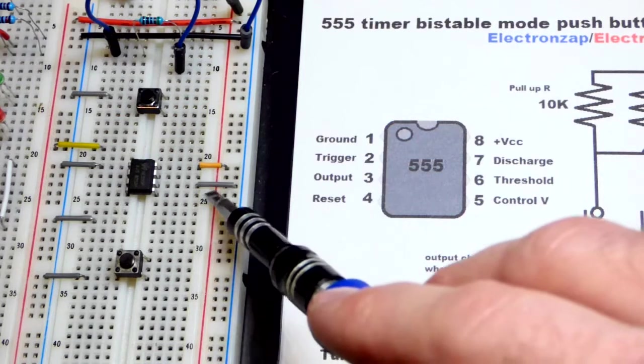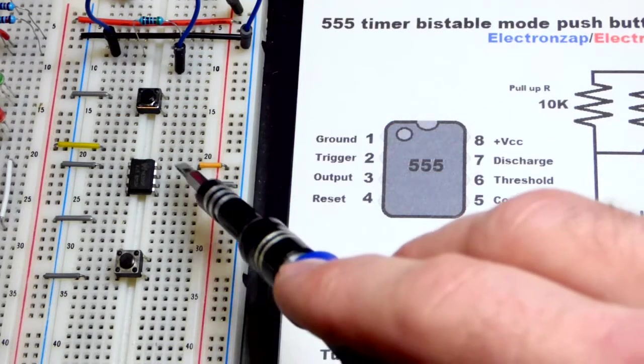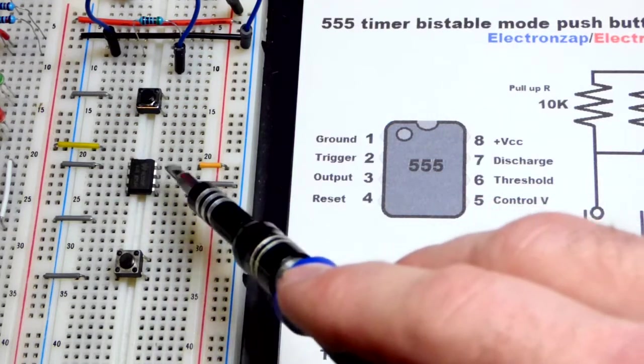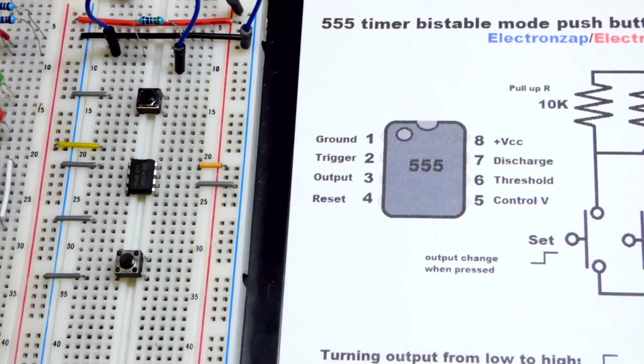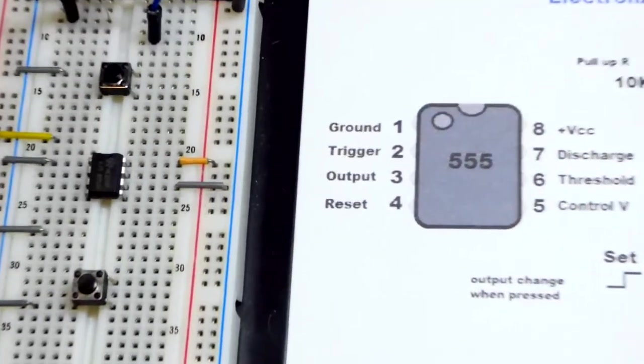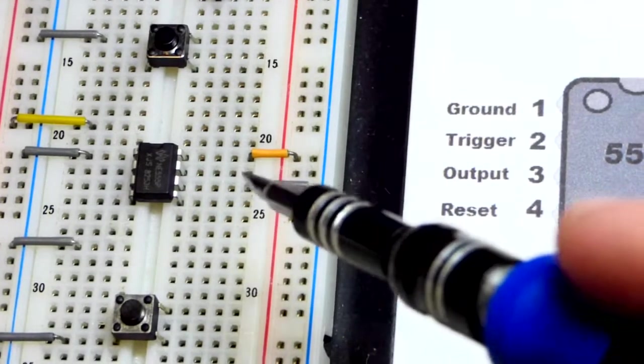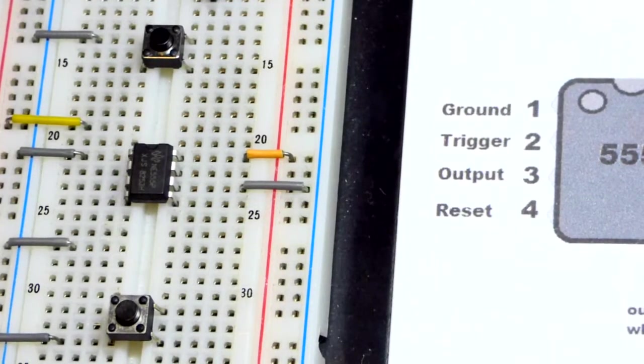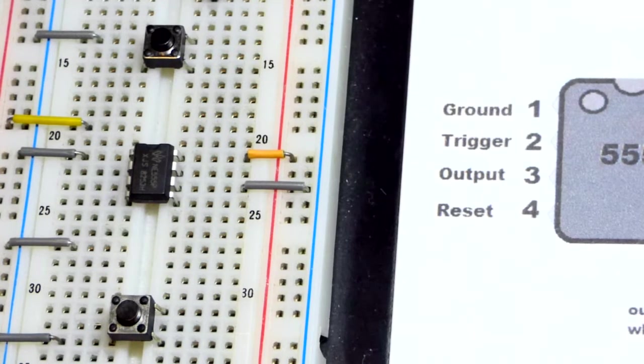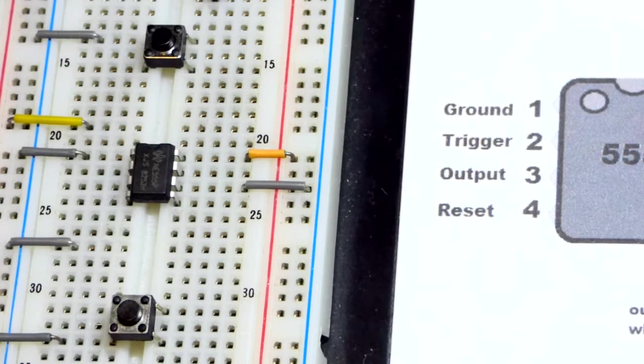So pin 6 here, that is the threshold. That's waiting for two-thirds of the power supply voltage or more. So what we do is we just connect it directly to ground right there. And that tells the switch not to do anything. It makes sure it doesn't do anything because it's always at zero volts no matter what. It's directly to ground.